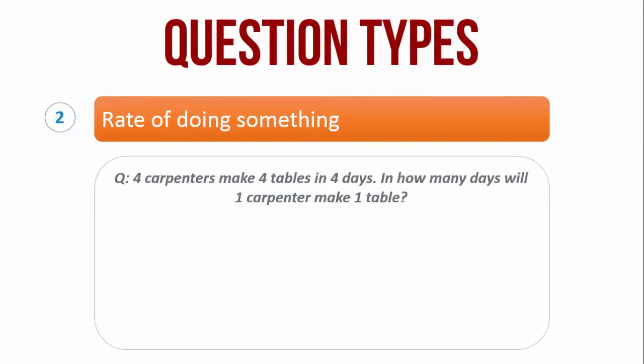Finding the rate of doing something. 4 carpenters make 4 tables in 4 days. In how many days will 1 carpenter make 1 table? Here, we have 3 variables: carpenters, tables and days.